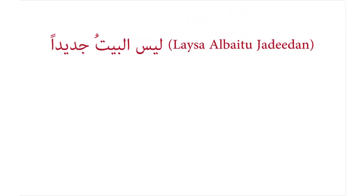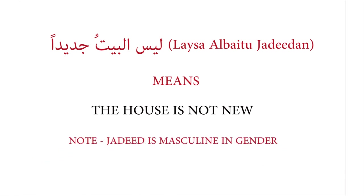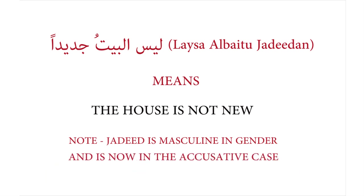Leysa al-betu jadidun means 'the house is not new.' You'll notice that the spelling of the word jadidun also changes — we add an aleph to the end of the word, and then tenwin feta, because jadidun is masculine in gender and is now in the accusative case.